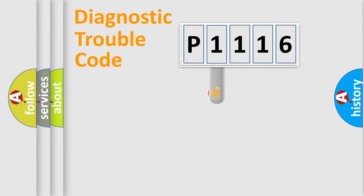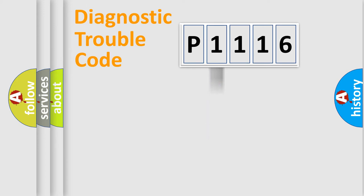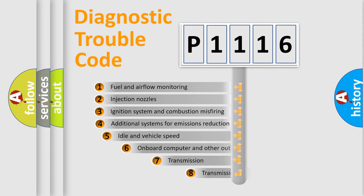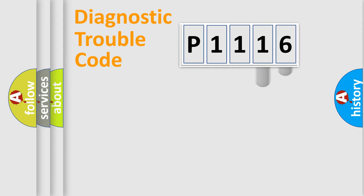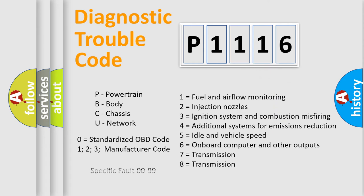This distribution is defined in the first character of the code. If the second character is expressed as zero, it is a standardized error. In the case of numbers 1, 2, or 3, it is a more specific expression of a car-specific error. The third character specifies a subset of errors. The distribution shown is valid only for the standardized DTC code, and only the last two characters define the specific fault of the group. Such a division is valid only if the second character code is expressed by the number zero.